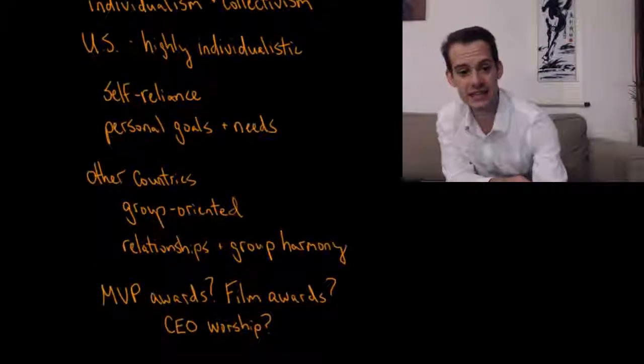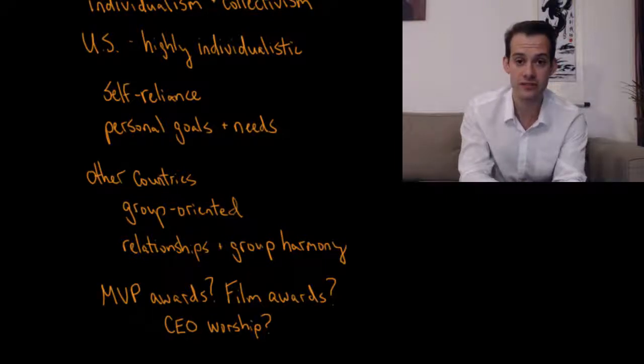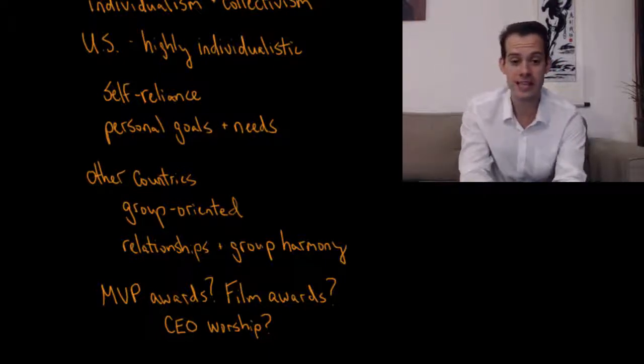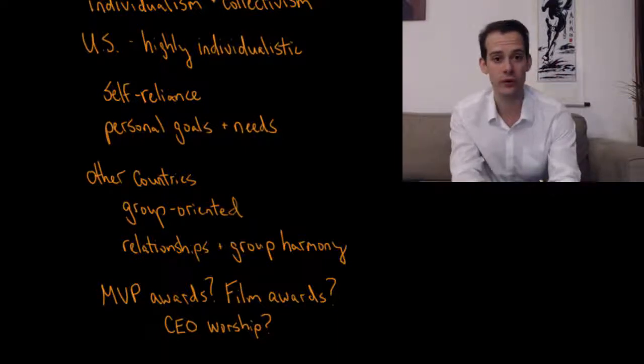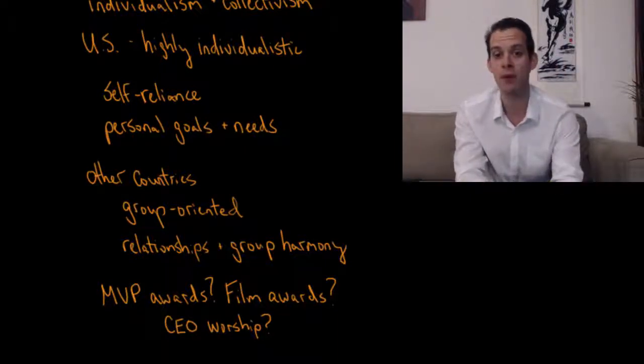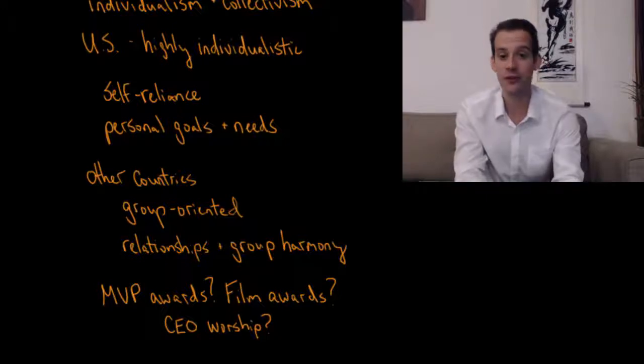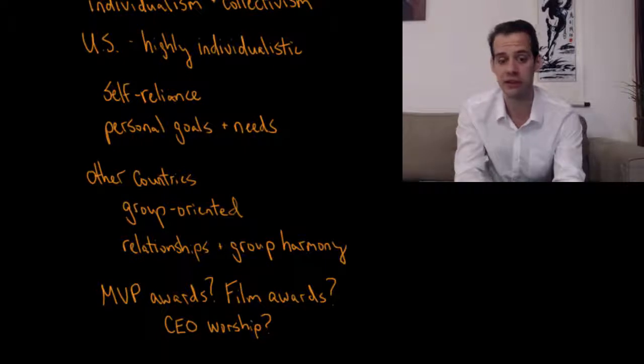And one way we might see this distinction between individualist and collectivist cultures is to think about things like MVP awards for sports. In the United States, we place great importance on these types of awards that single out an individual for their contributions. Or in the case of film awards like the Oscars, we see that rather than saying this great film was the result of the work of hundreds of people, we pick out one individual to say this person did an exceptional job and we want to reward that just based on the individual contributions. Or we can see this in the business world in what we might call CEO worship in some situations where people lavish praise on one individual from a corporation rather than recognizing that the product that the corporation has produced has been the result of the work of thousands and thousands of people.